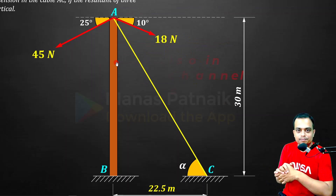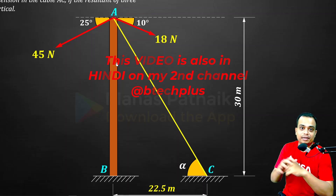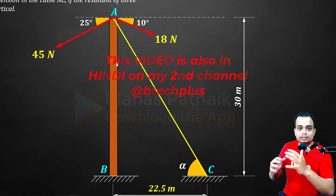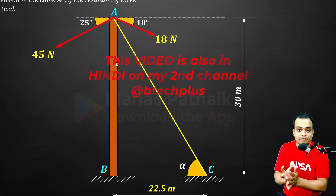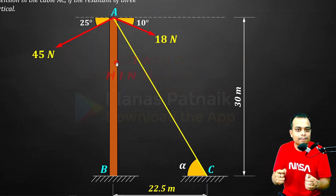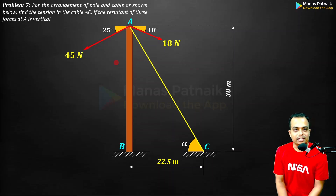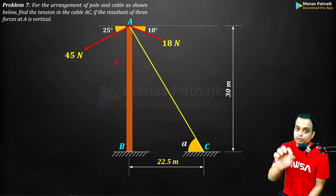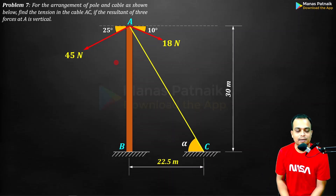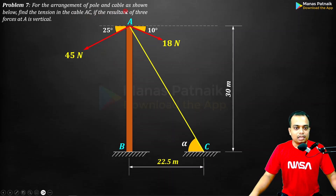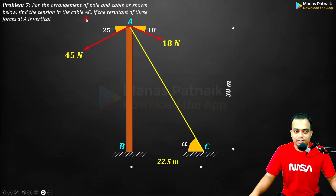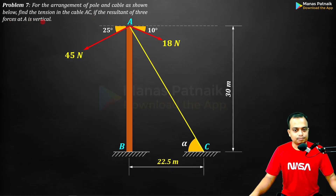To understand the idea of concurrent coplanar forces, this example demonstrates it perfectly. We'll apply trigonometry, resolve forces into cosine and sine components, and work out the resultant. Good evening students, this is Manas Pranak, your friend and tutor. Here is the problem: for the arrangement of a pole and cable as shown, find the tension in cable AC if the resultant of the three forces at A is vertical.